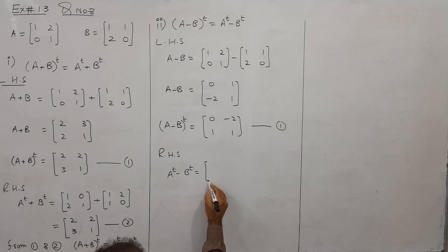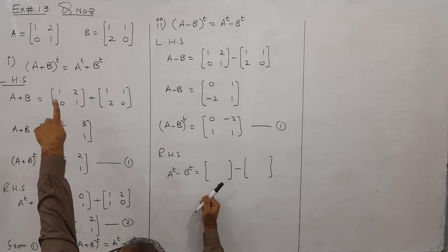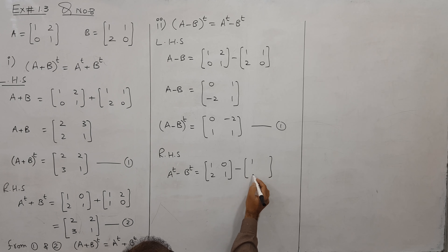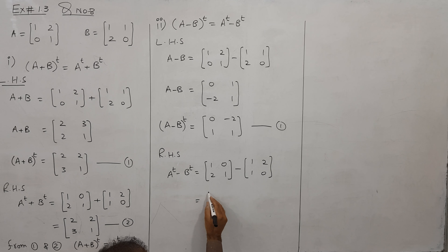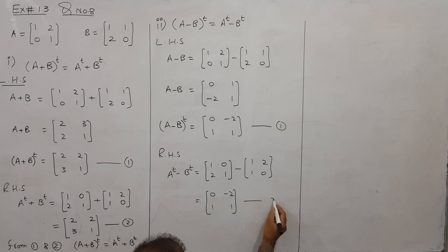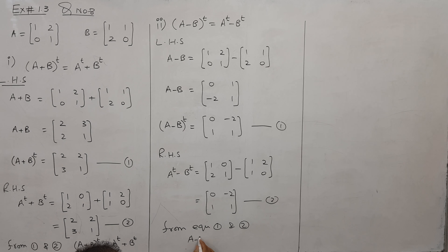A^T یہاں ہے minus B^T یہاں ہے۔ A کا transpose لیں تو پہلی row پہلا column بن جائے گا: 1 2 ایسے آ جائے گا، 0 1 ایسے آ جائے گا۔ اسی طرح B^T: 1 1 اور 2 0۔ جب ان کو minus کریں گے: 1 minus 1 = 0, 2 minus 1 = 1, 1 minus 2 = minus 2 — بالکل match ہو گیا۔ Equation 1 اور 2 سے ہم کہیں گے: from equation 1 and 2 یہ verified ہو گیا۔